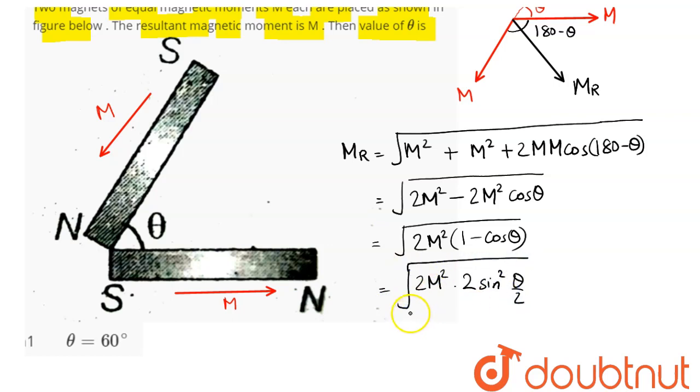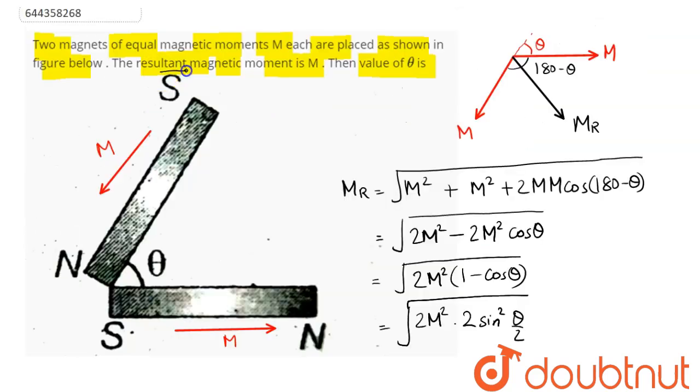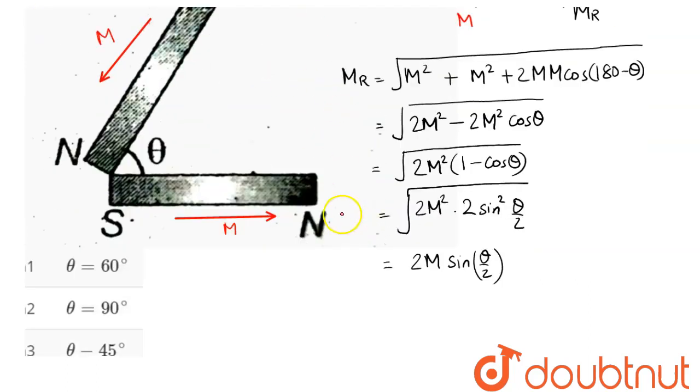2M into sin of theta divided by 2. So this is the net magnetic moment. The resultant magnetic moment is M, it says. The resultant magnetic moment here is also equal to M. So M and M cancels out.